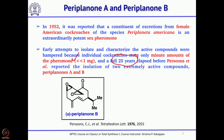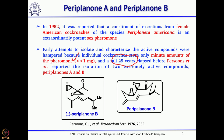If you look at their structures, Periplanone A is a little bit complex. It has two epoxides, two double bonds, one carbonyl group, and one isopropyl group.